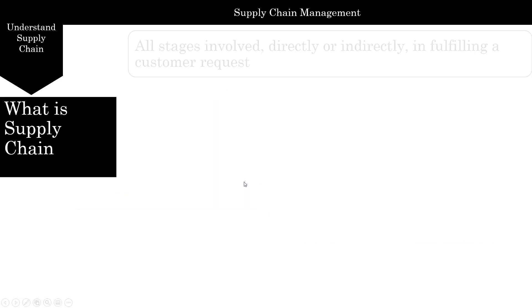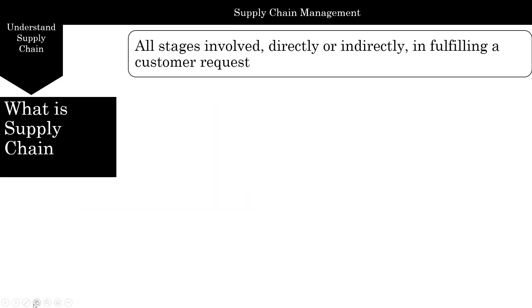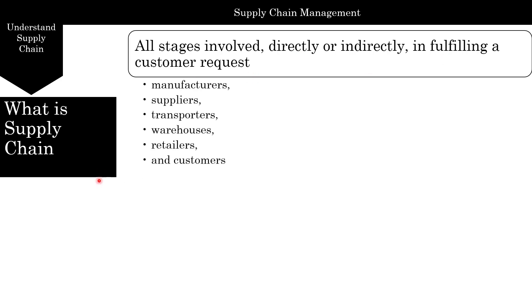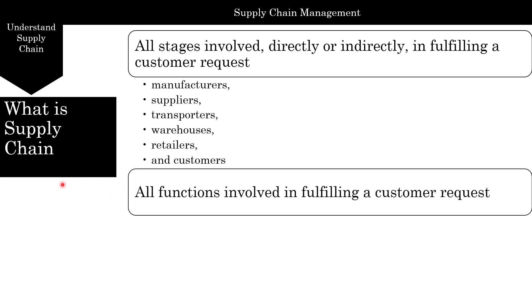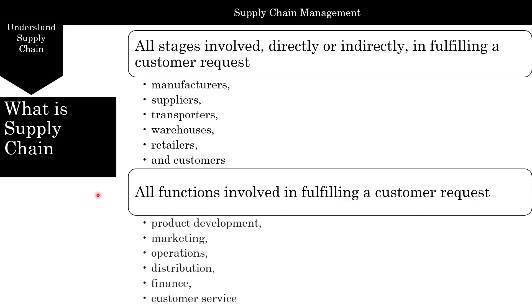So what is a supply chain? All stages which are involved directly or indirectly in fulfilling a customer request are essentially part of a supply chain. This includes manufacturers, suppliers, transporters, warehouses, retailers, and customers.